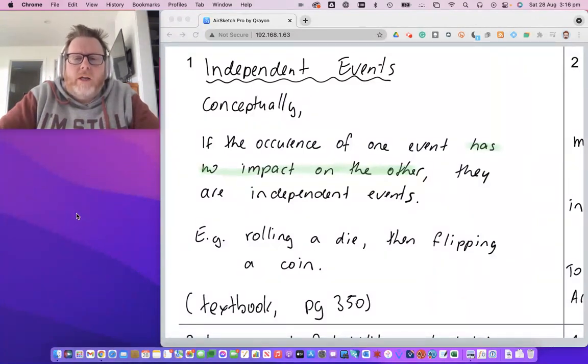My example is rolling a die then flipping a coin, or rolling a die and flipping a coin at the same time. Whatever happens to the die roll - whether I get a six or a five or a two - has no impact on whether I get a head or a tail, and vice versa. They're independent events, physically separate from each other.